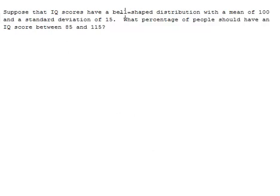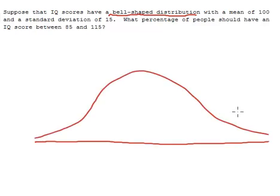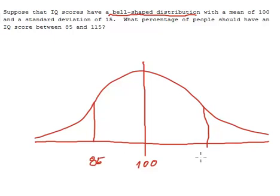Suppose that IQ scores have a bell-shaped distribution with a mean of 100 and a standard deviation of 15. So from here to here is 15, this is 85 and this is 115. What percentage of people should have an IQ score between 85 and 115?